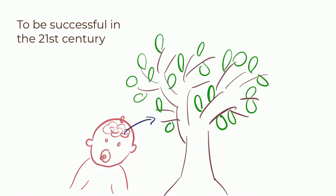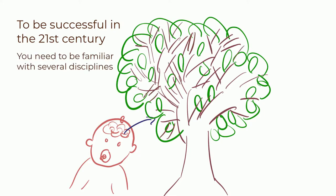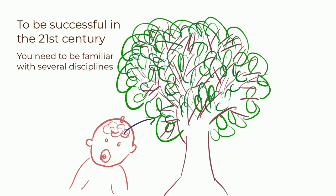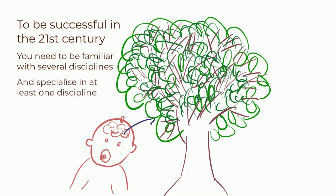To be successful in the 21st century, it has become imperative that in your tree of knowledge, there are many branches with lots of leaves and one or two branches should be really very dense. In other words, you must be aware of several different knowledge streams and have mastery in one or two of these streams.